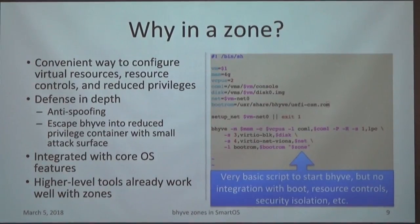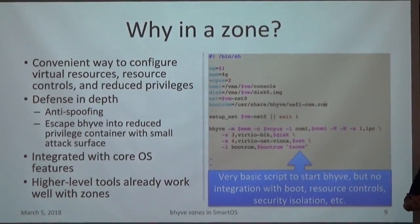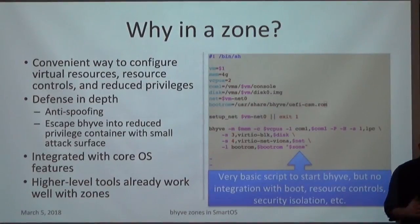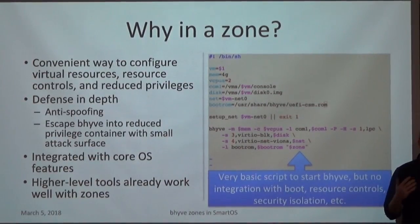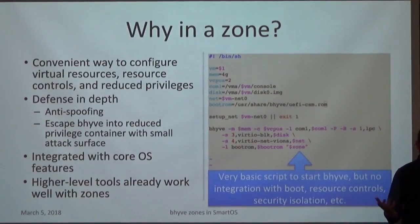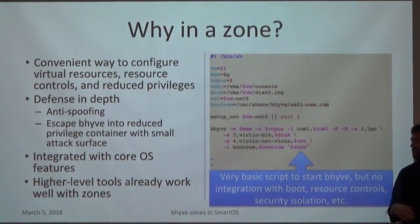SmartOS runs things a little differently — it doesn't run Beehive by itself, it runs everything inside a zone. Beehive runs in the zone, and collectively they call it ZHive. Running Beehive in a zone is a convenient way to configure resources. Everything in SmartOS is managed via a JSON file specifying how a zone is configured. It also has security features — if you can escape Beehive, maybe you can't escape the zone. The zone itself is sandboxed. Zones are already an integrated Illumos feature, and higher-level tools like VM-ADM and Zone-ADM already work well with zones.